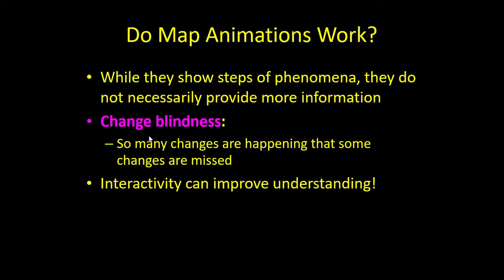One issue with map animations is that they're cool, but oftentimes the viewer doesn't know what they're looking at. This is called change blindness — when so much is happening that important changes are missed. This is where you have to be cautious about duration, rate of change, and magnitude of change. Is your audience missing too much because the animation is going too fast? Or is there not enough change happening? We need to be aware of our audience and their limitations.